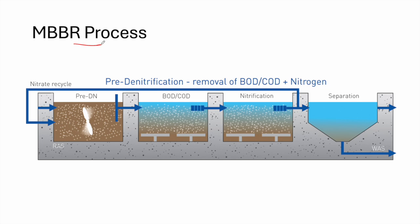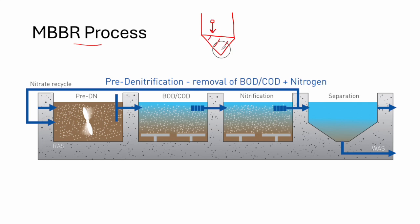We will go through the MBBR process quickly as a refresher to identify the main differences between the two. For the MBBR, we first have primary treatment, which can be a sedimentation tank. In this sedimentation tank, particles settle down by gravity and form a sludge through sedimentation of solid particles.